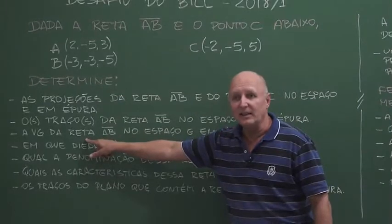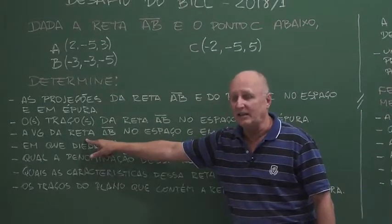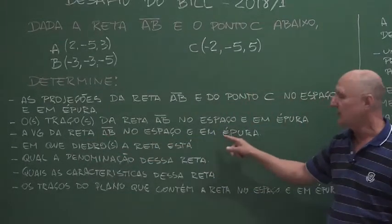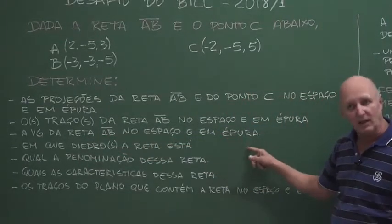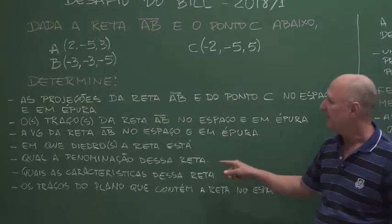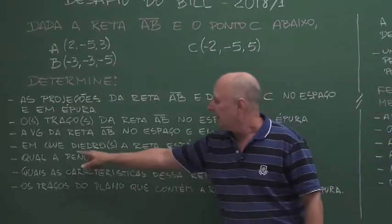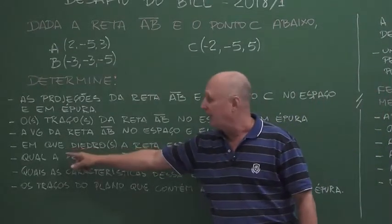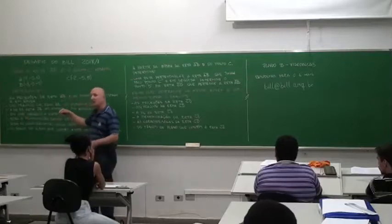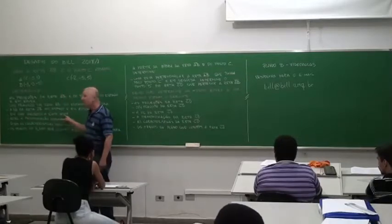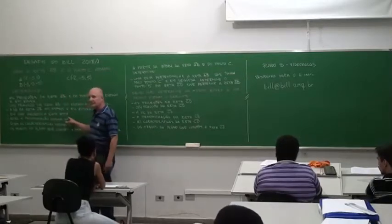Then, determine the real magnitude, the VG of line AB, in space and in epoch. Then, you will tell me in which diedro or in which diedros this line is.